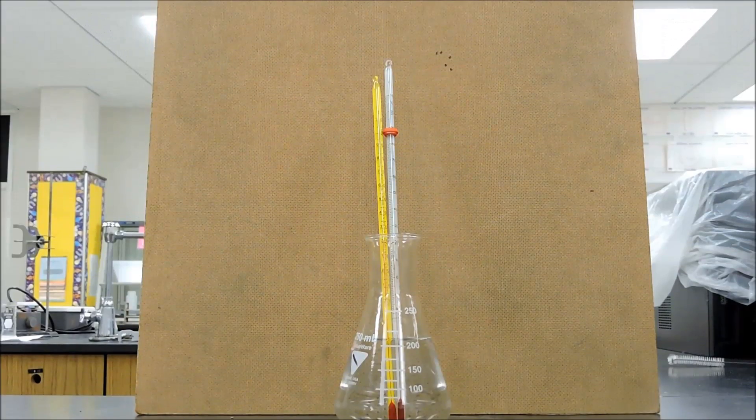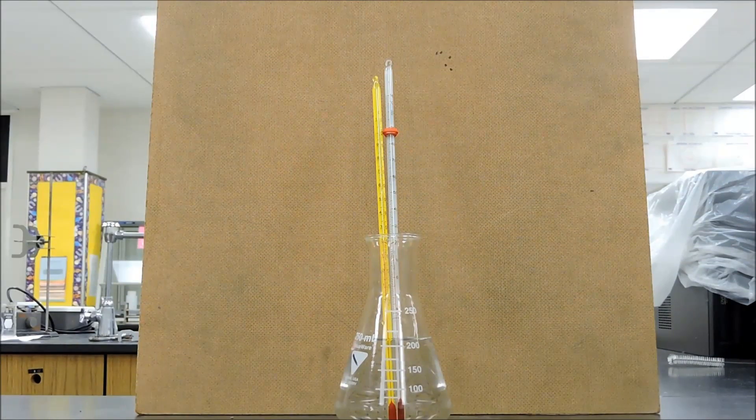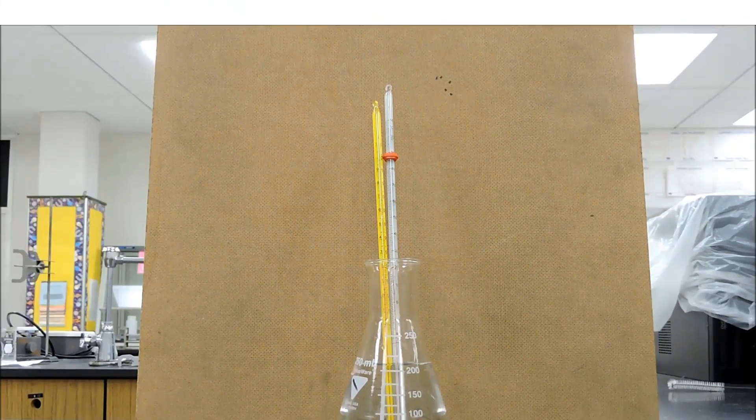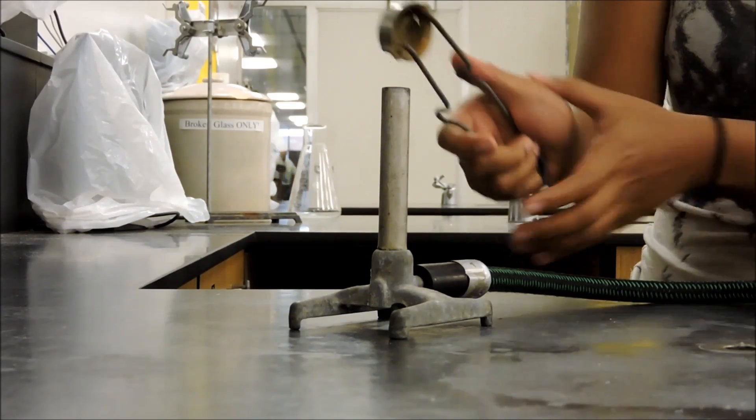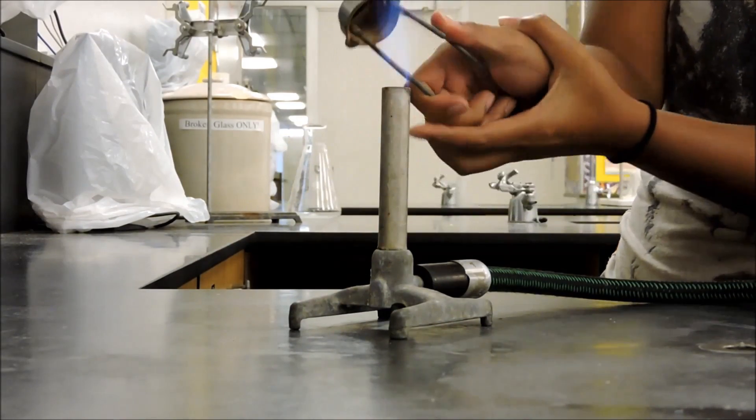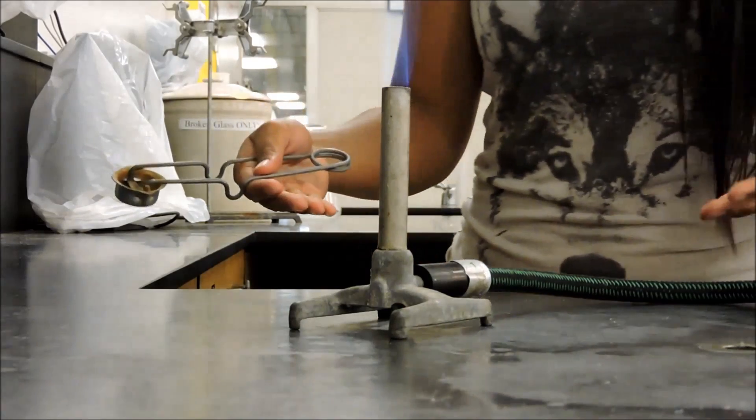These are thermometers. They are used to measure temperature. Thermometers will be mainly used in the calorimetry lab. The striker is used to light the Bunsen burner. A Bunsen burner is used to heat up items.